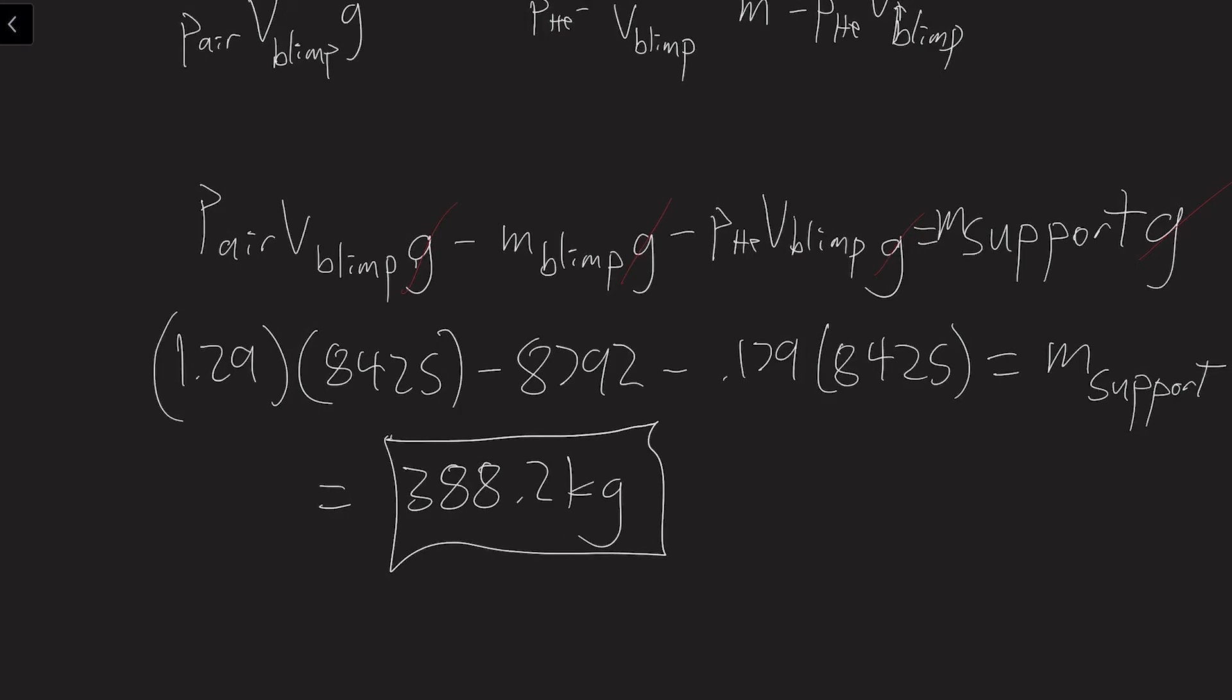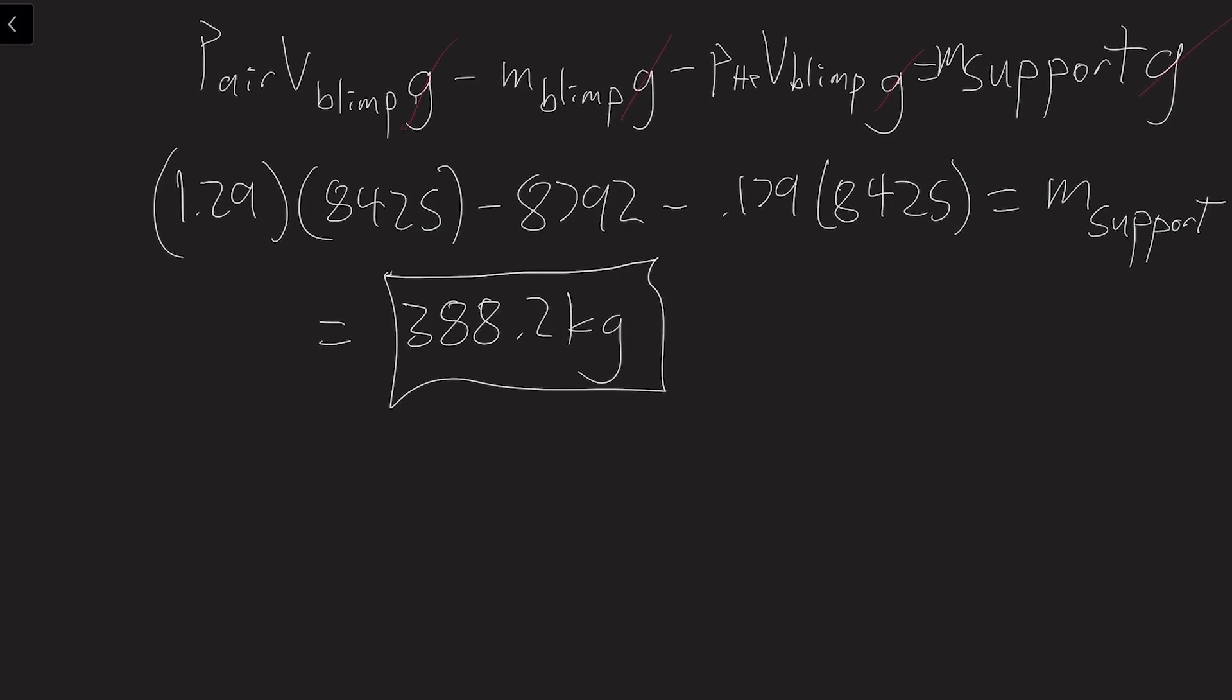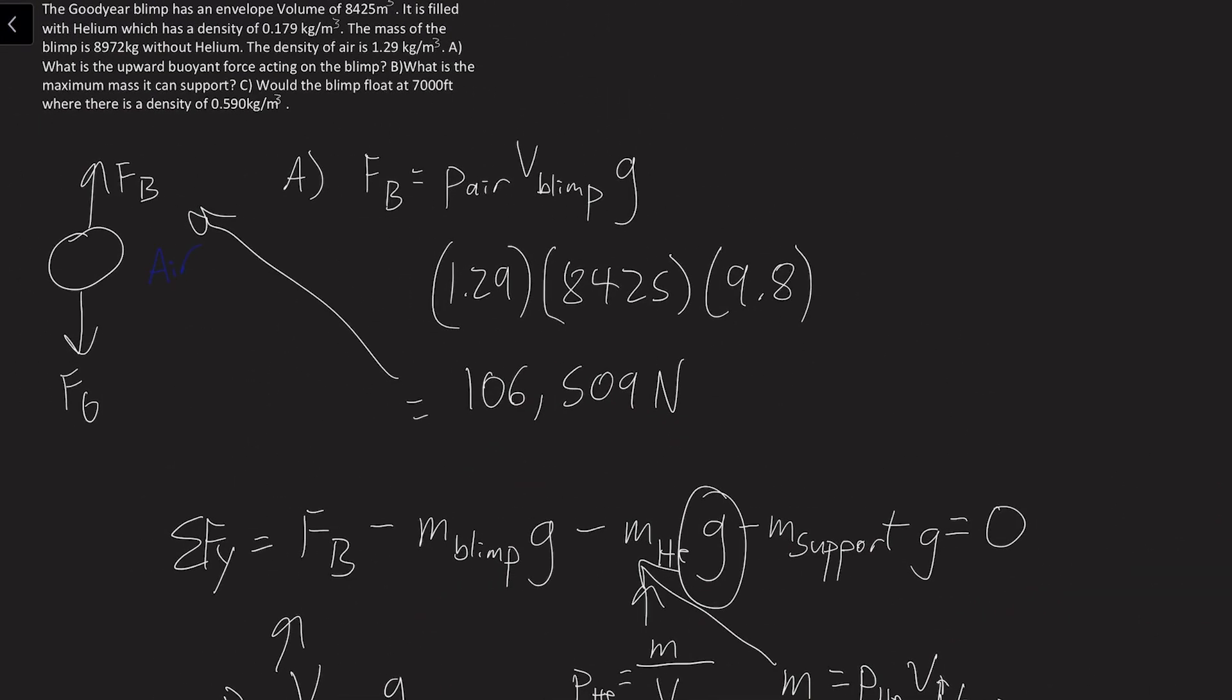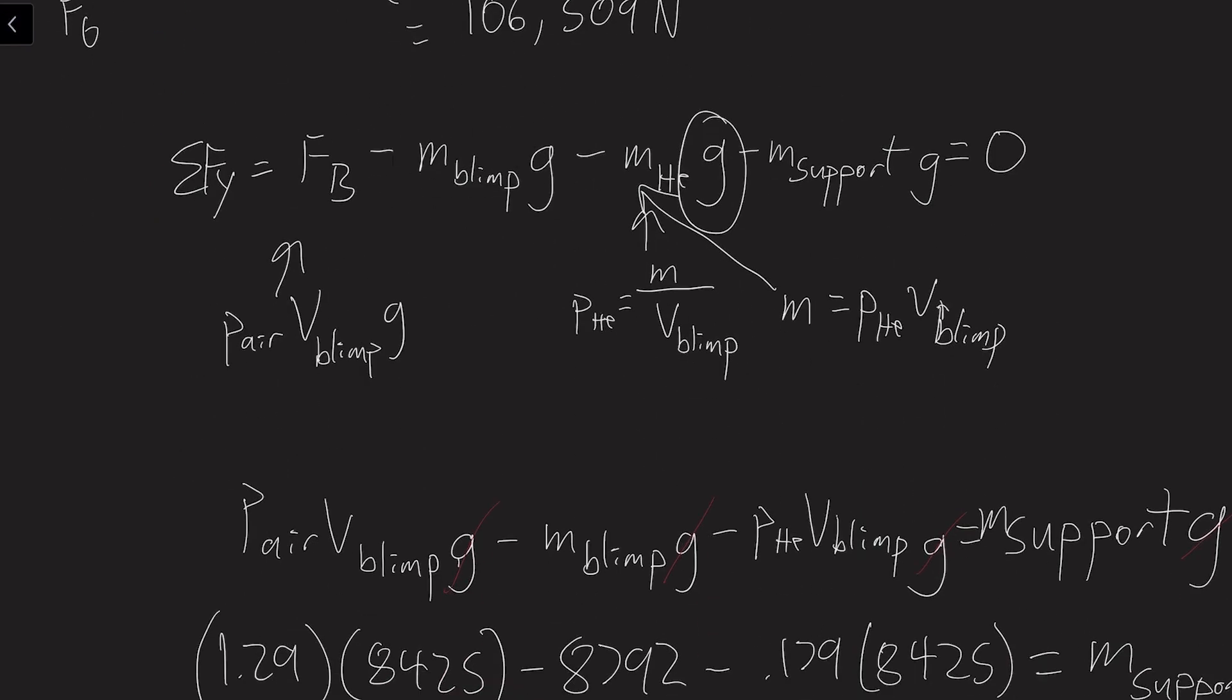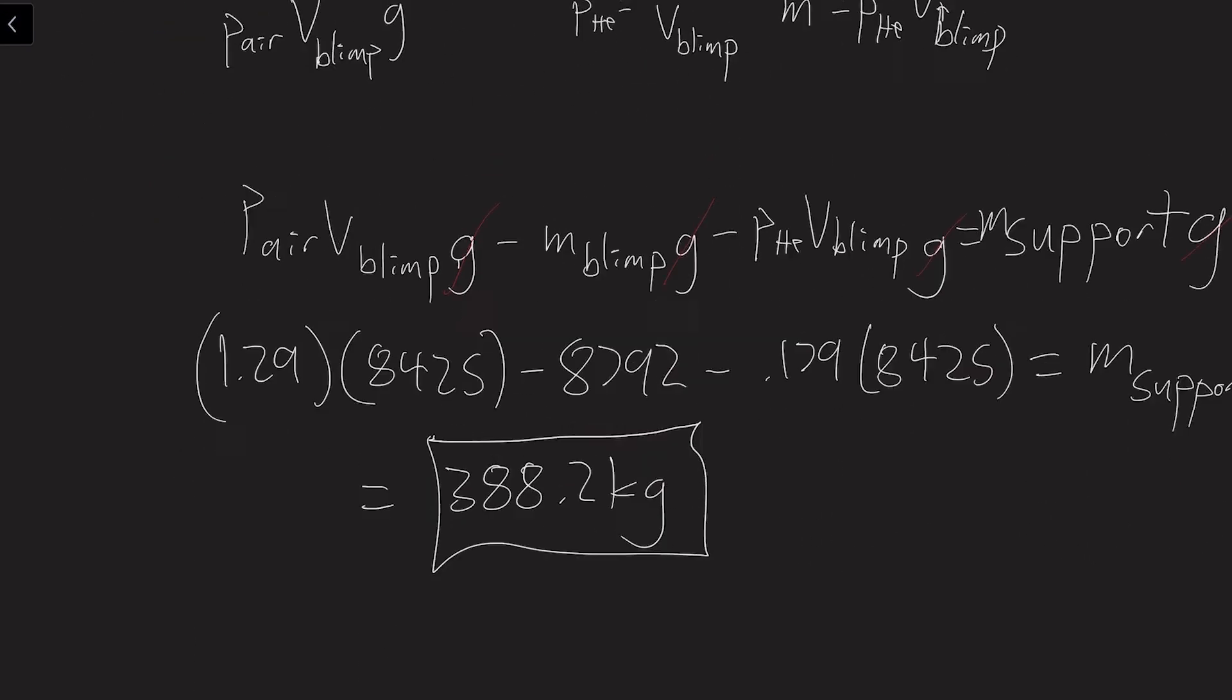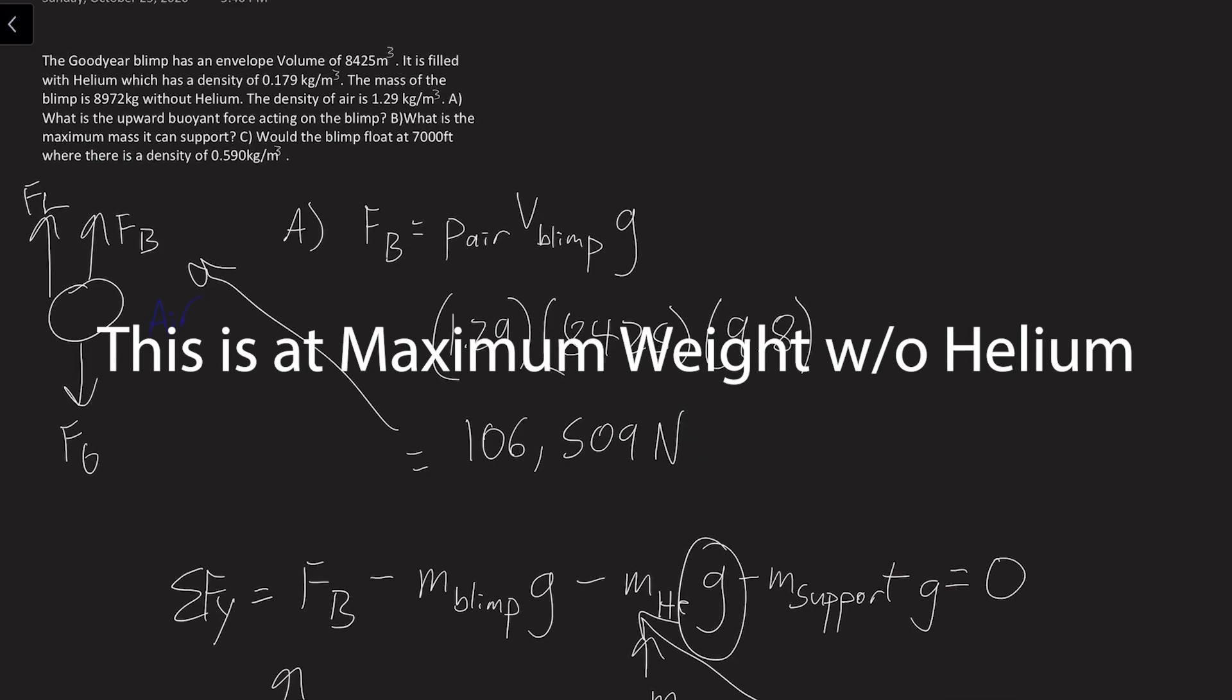There you go. And the reason why this is so low is the Goodyear blimp has the ability to turn its propellers to face downward. So it will also create a lifting force. So there'd be a force of lift, which I'm not going to go into. And that could help the blimp go up in the air. At higher altitudes and different temperatures, it would also be able to fly. And these numbers might not be exactly accurate, but I did gather them from the website.